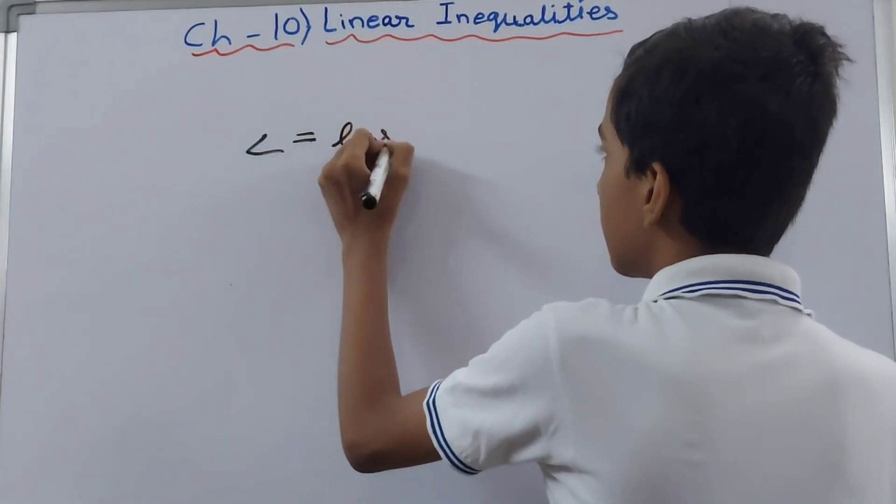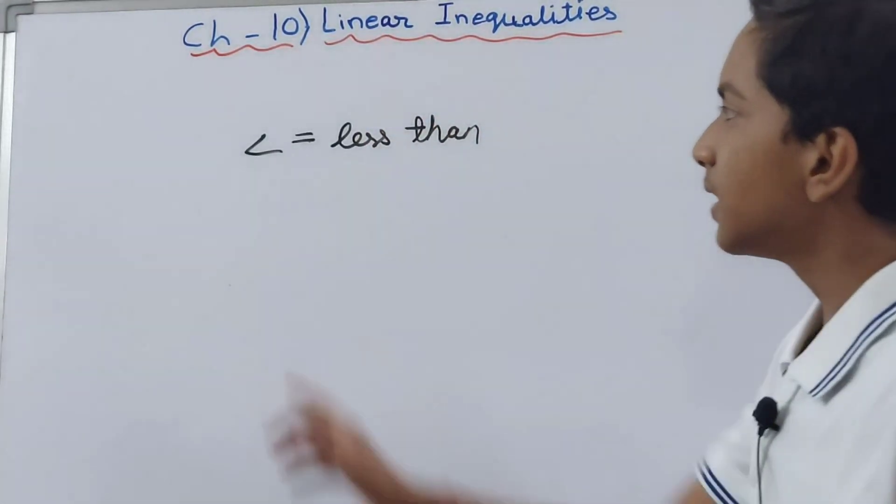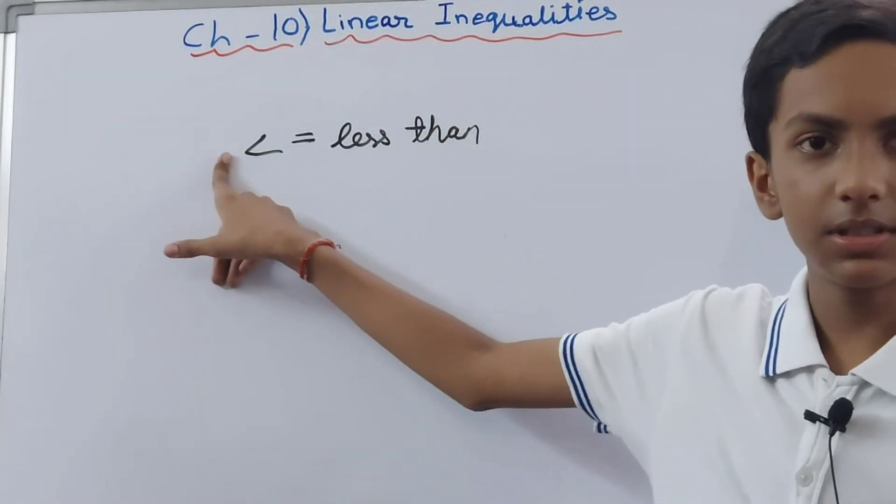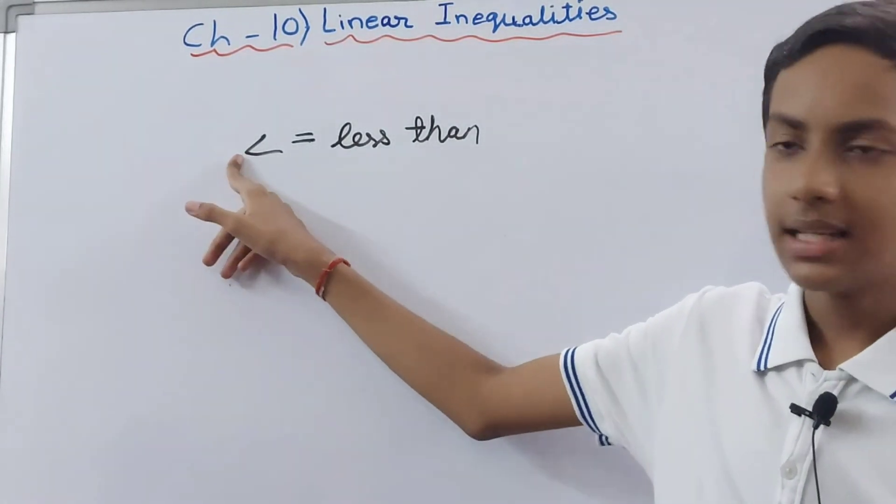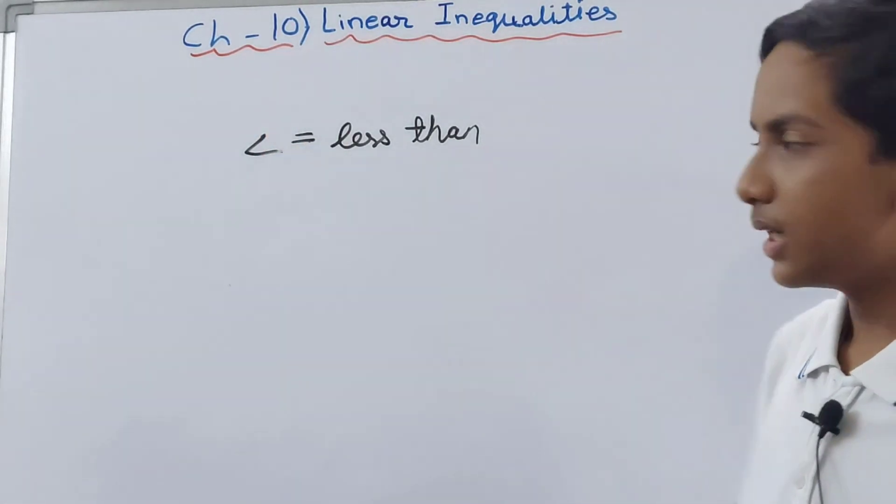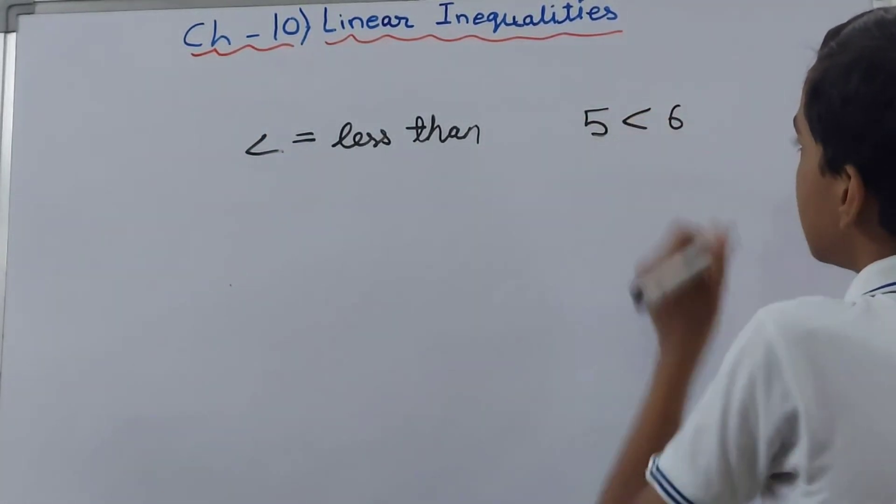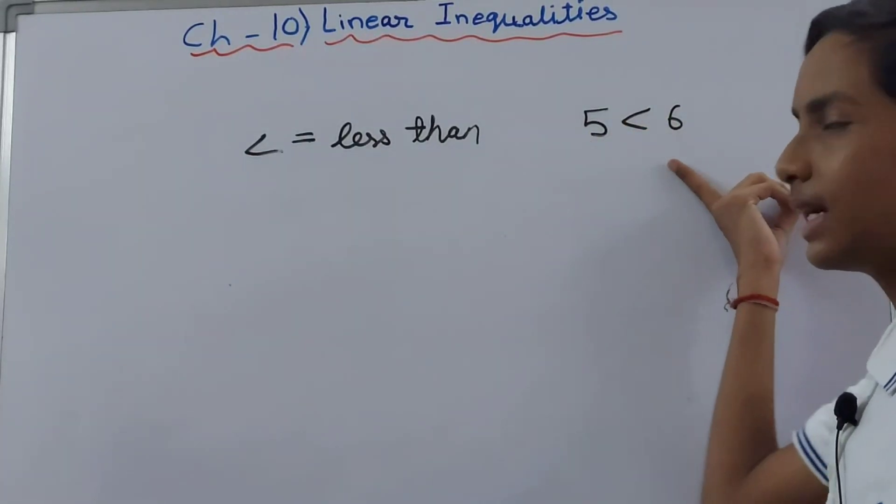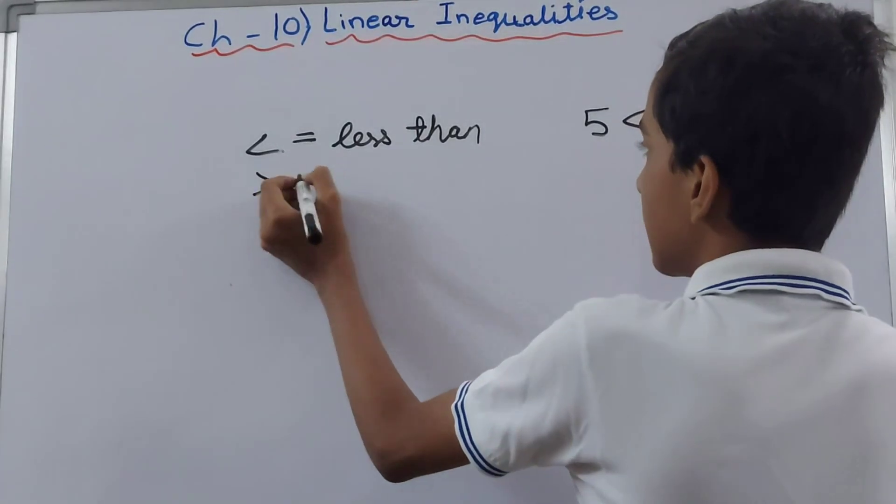This sign means less than. Any number that is written to the left of this sign, where this closed part is, that number is less than the number towards this open part. For example, 5 less than 6. You see, 5 is less than 6.